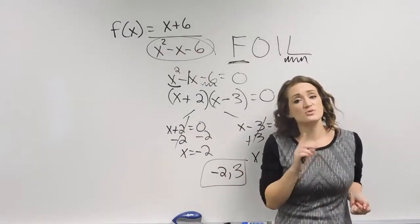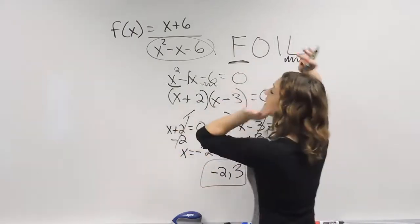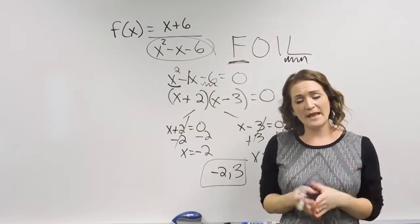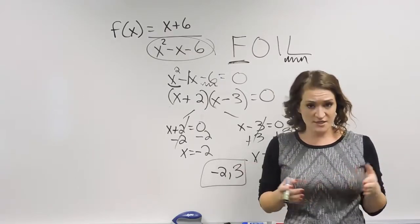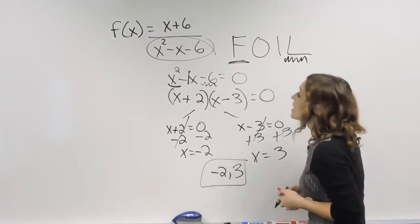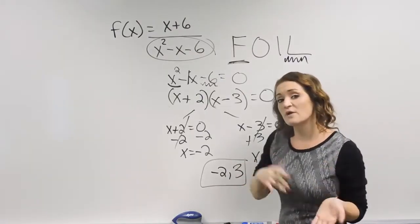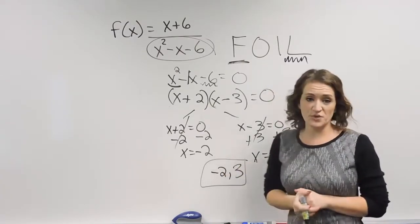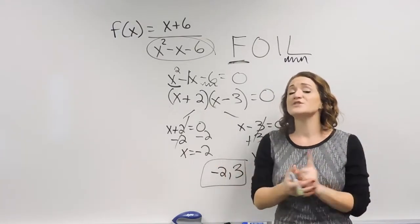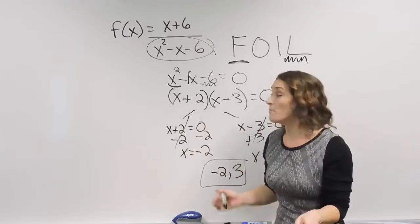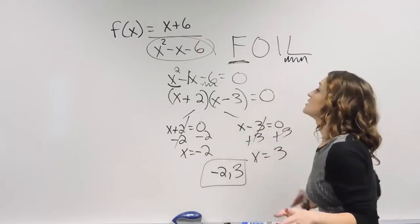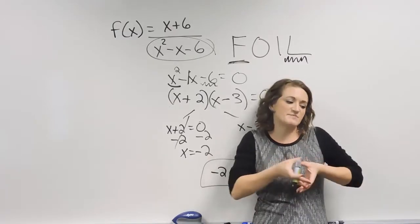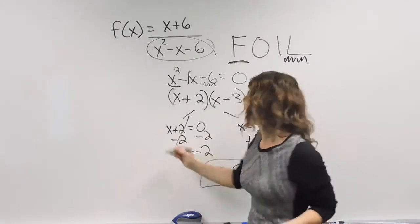My two solutions are negative 2 and 3. Those are the values that make my denominator equal zero, therefore making my rational expression undefined. So if all you're asked is what values make the rational expression undefined, the answer is negative 2 and 3. If you're also asked to state the domain, your domain is essentially the span of all your x values.